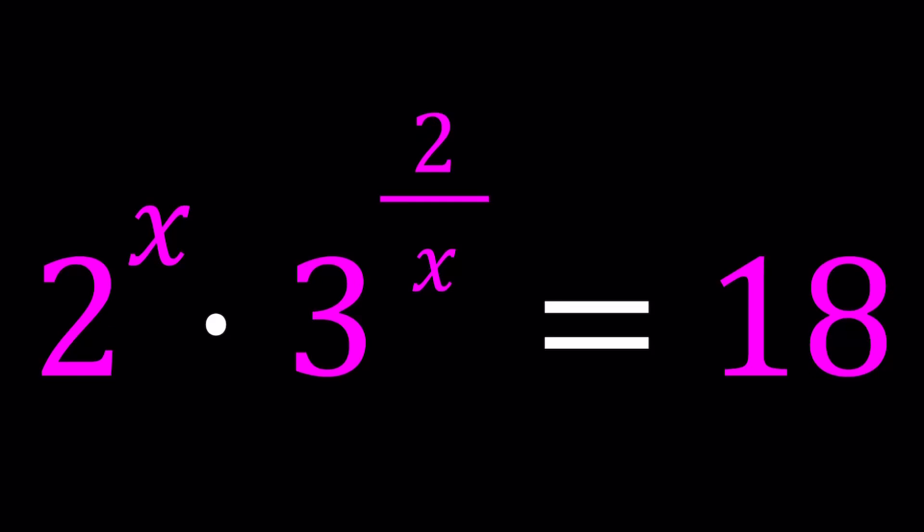Hello everyone, in this video we're going to be solving a nice exponential equation. We have 2 to the power x times 3 to the power 2 over x equals 18, and we're going to be solving for x values. I'm also going to show you a graph at the end, and we'll be presenting two methods. Let's start with the first one.